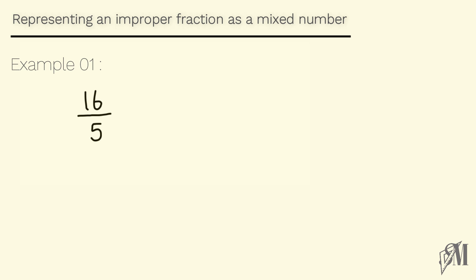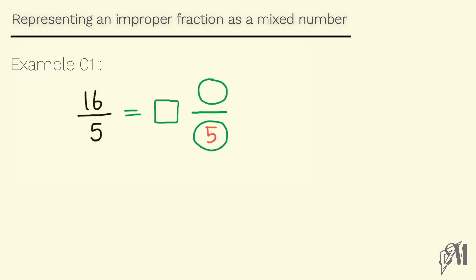Improper fractions can also be represented as a mixed number. Let's see how to do that. Look at this example: 16 over 5 is an improper fraction. To convert this into a mixed number, remember a mixed number has two parts — a whole number and a fraction. The denominator of the fraction never changes during conversions, so the denominator will always be 5.